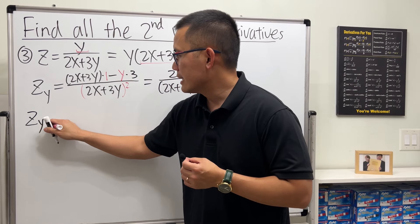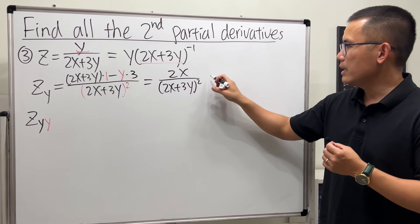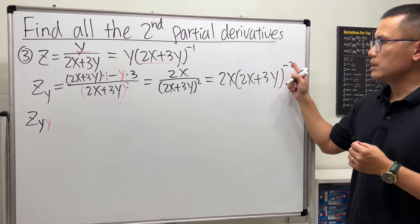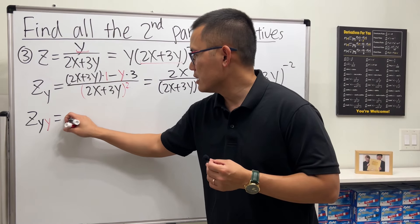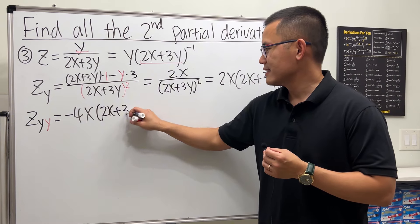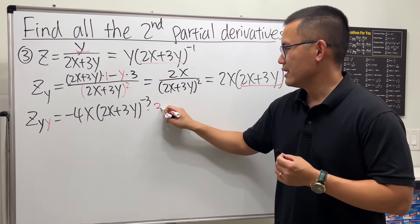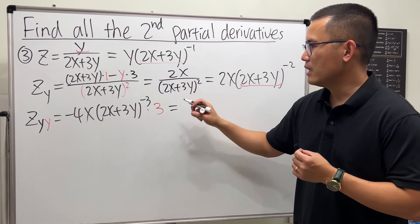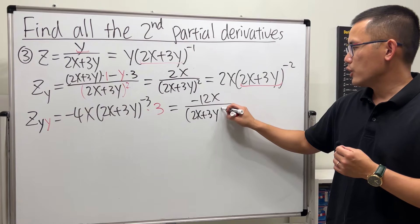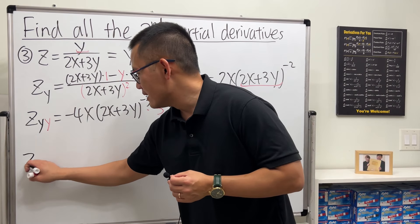Let's also find zyy. Since there is no y in the numerator of zy, rewrite 2x over (2x + 3y) squared as 2x times (2x + 3y) to the negative two. Using the power rule: negative 2 times 2x gives negative 4x, the power becomes negative 3, and the chain rule requires multiplying by 3. So zyy equals negative 12x over (2x + 3y) to the third power.